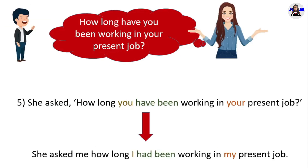Next example: 'How long have you been working in your present job?' She asked 'How long have you been working in your present job?' in direct speech. In reported speech, she asked me how long I had been working in my present job. 'Have been' in present perfect continuous changes into 'had been' in past perfect continuous. 'You' changes into 'I.' 'Your' changes into 'my.'